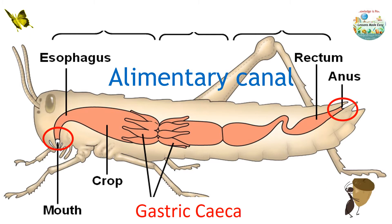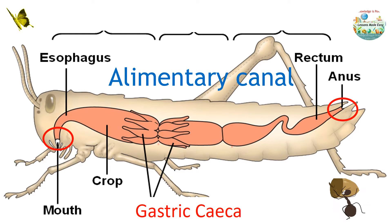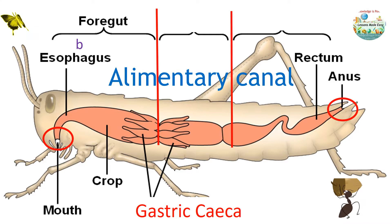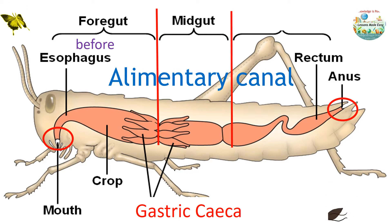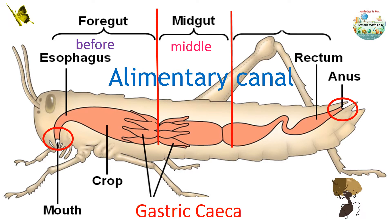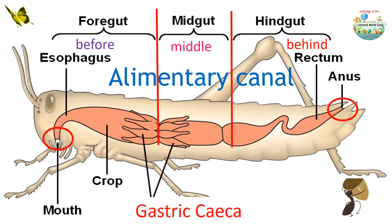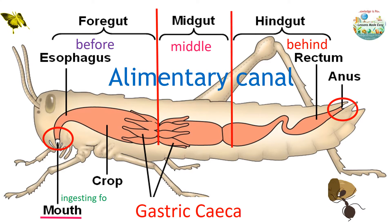This long tube-like structure is divided into three sections. The foregut is the section before or in front, the midgut is the section in the middle, and the hindgut is found behind in the insect's body.